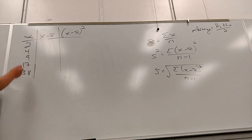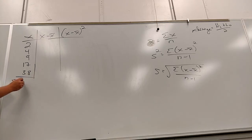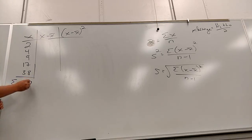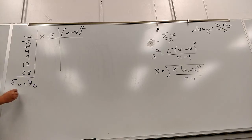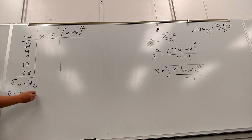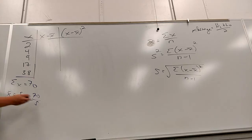When you add these up, what's the sum of X? 70. And then X-bar is the sum of X divided by N, so it's 70 divided by 5, which is 14.